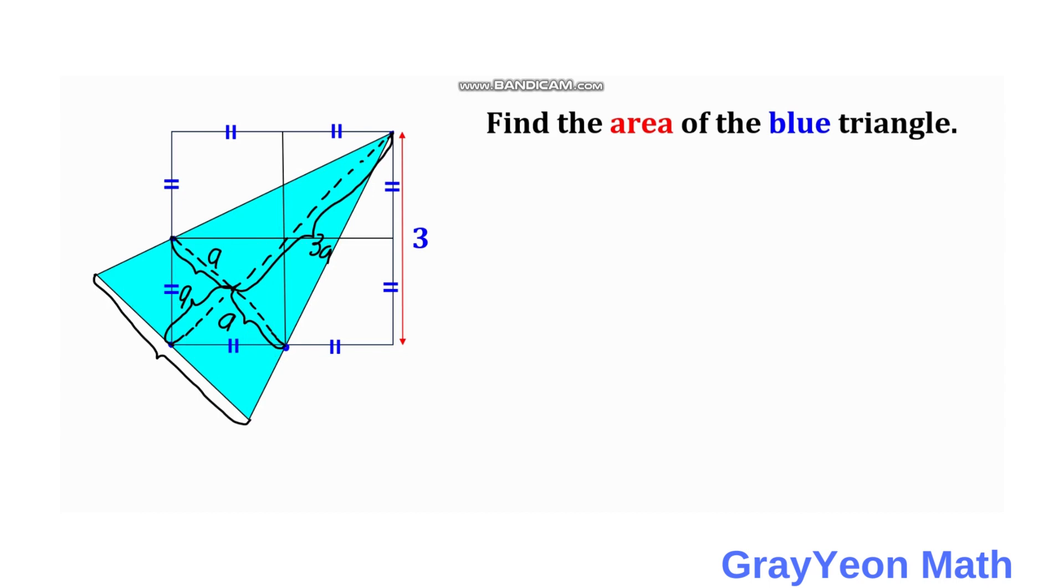Okay, so for the smaller triangle we have 3a over 2a, 3a being the height and 2a being the base, over 4a over this unknown length. We call this as b, this unknown length b.